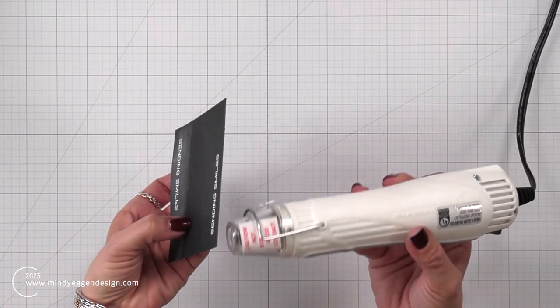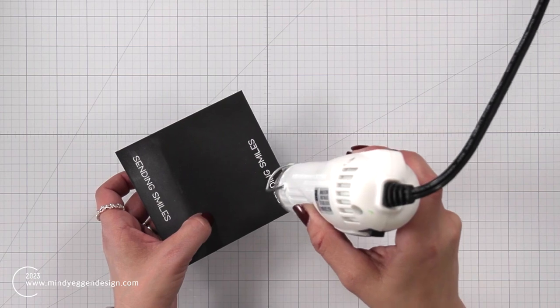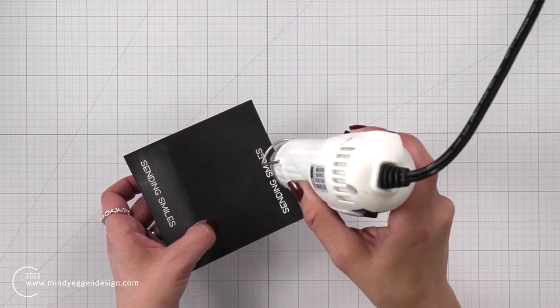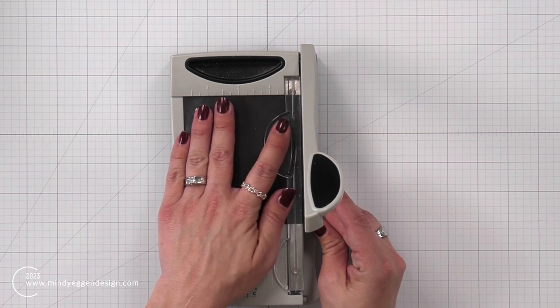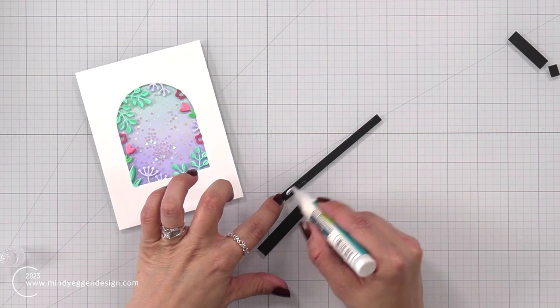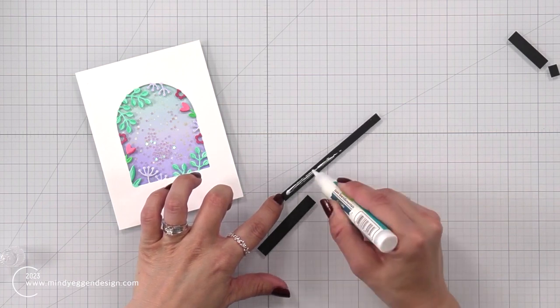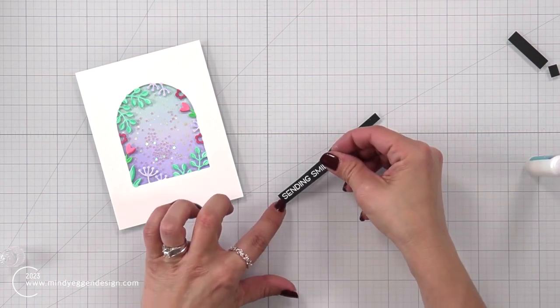Now you may notice there is another one there on the other side. I smeared my embossing powder after I heat set it because I didn't let it sit. So that's very important. You want to let the sentiment sit for a minute or so after you heat emboss it. Because that heat embossing, it's still wet, but you need to just let it sit and cool down.